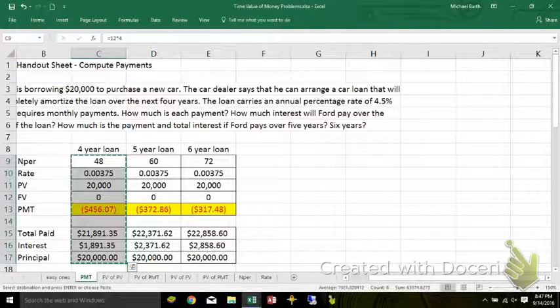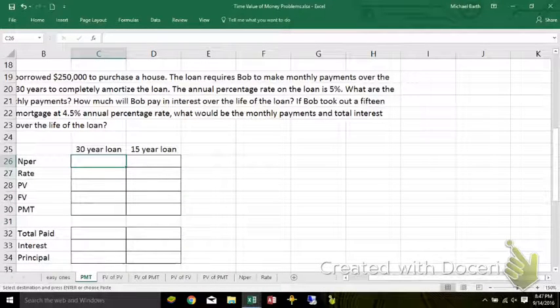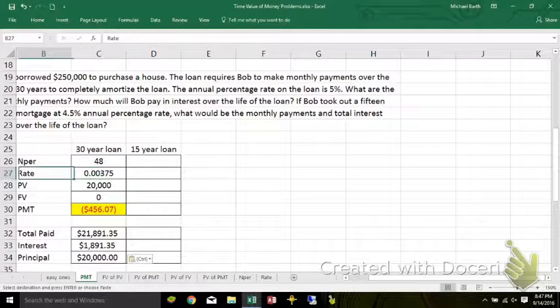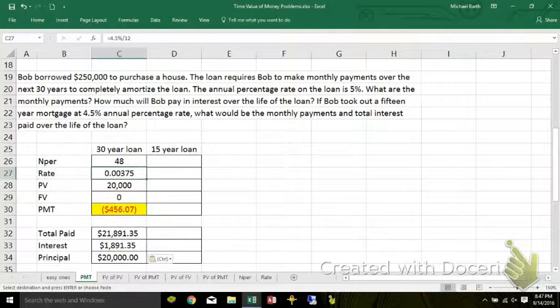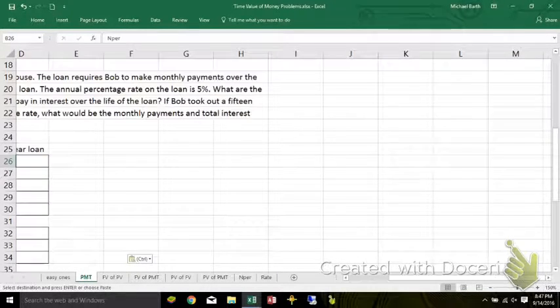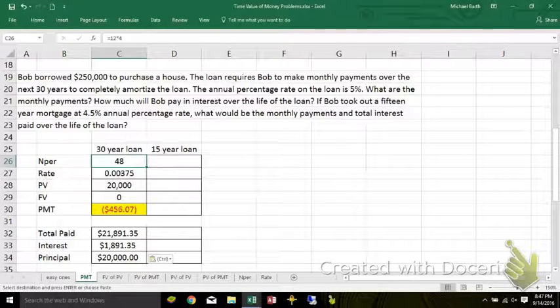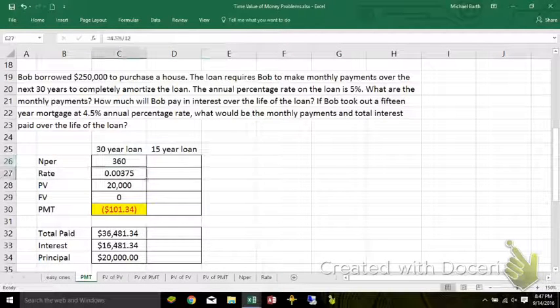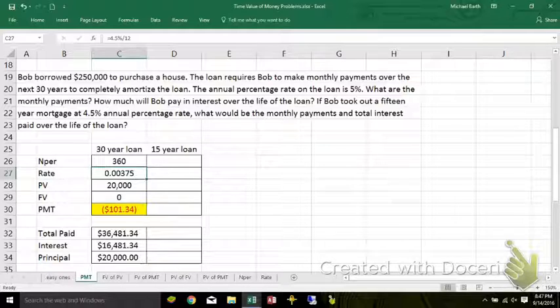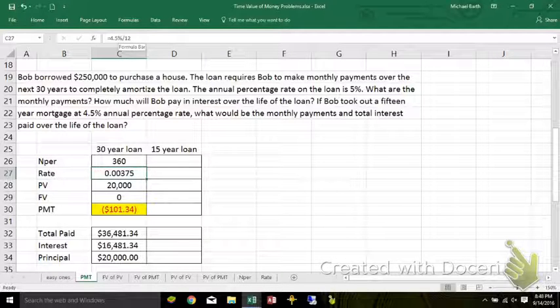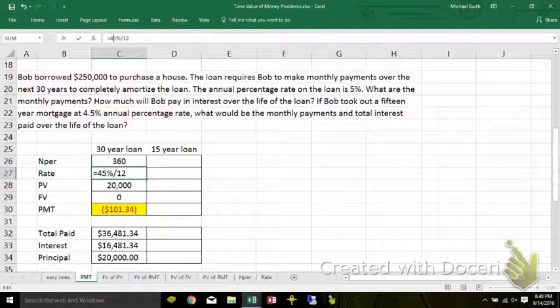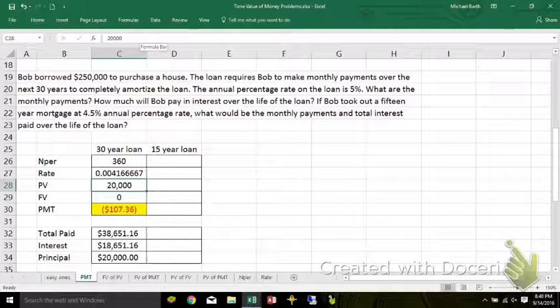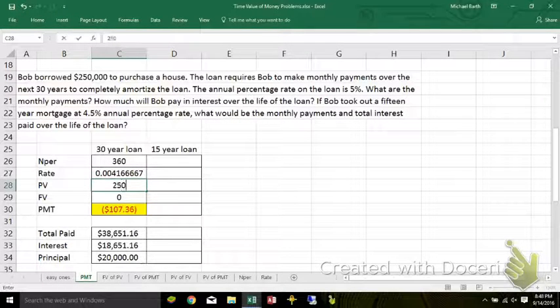Instead of 48 monthly payments, there are 360 payments. It's not 4.5% monthly, it's 5%. And it's not $20,000, it's $250,000.